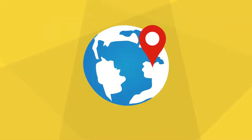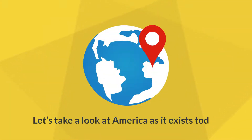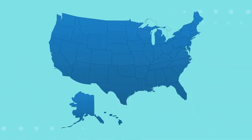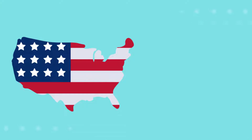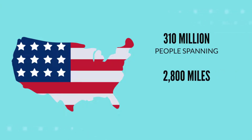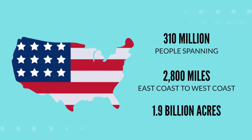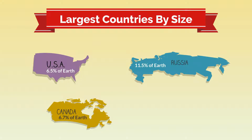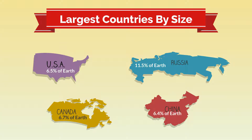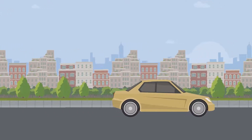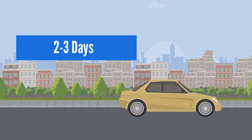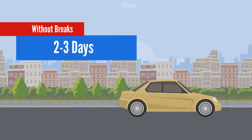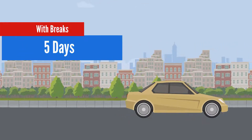Now that we've covered the fundamentals, let's take a look at America as it exists today. The United States of America is a big place. It presently is a nation of about 310 million people spanning 2,800 miles from the East Coast to the West Coast and containing 1.9 billion acres. America is currently the third largest country in the world behind Russia and Canada. And depending on your source, America and China are virtually tied in terms of size. Just to put all of this in context, it would take you around two to three days of nonstop driving to get from New York to California without brakes. With brakes, it would take at least five days.